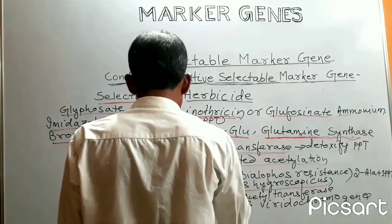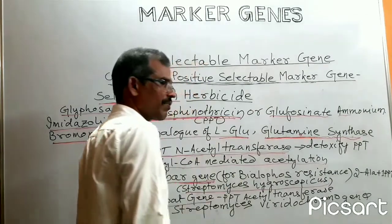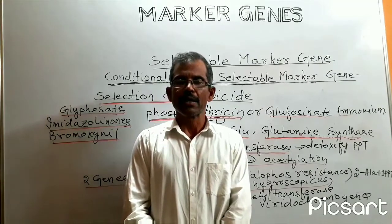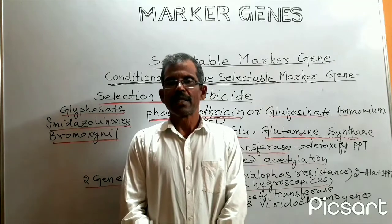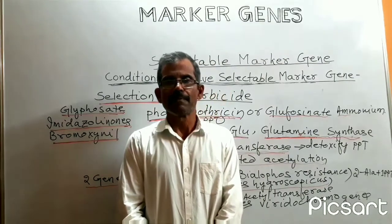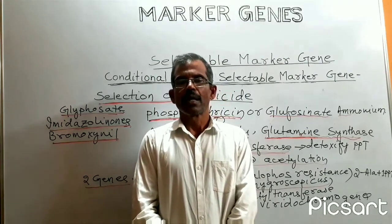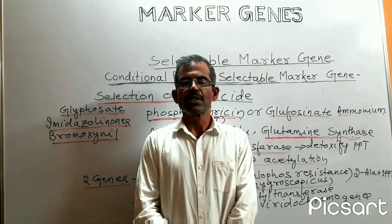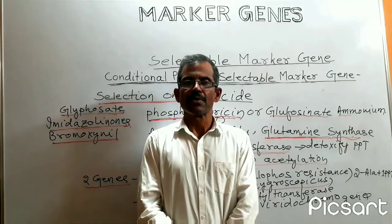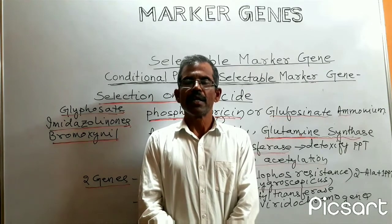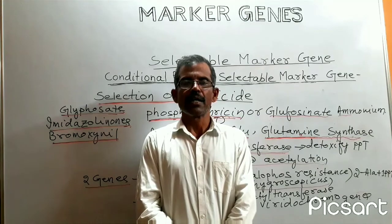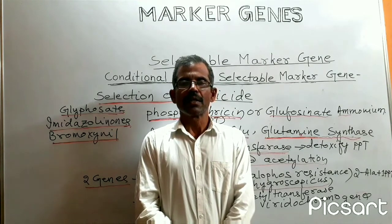These two gene systems, the bar gene and the pat gene, are frequently used as marker gene systems to select transgenic plants in several species. In several species, the kanamycin system does not work effectively, and kanamycin does not kill monocot species efficiently, but phosphinothricin and bialaphos kill monocot species very efficiently. This concludes the discussion on the use of herbicides as selective agents for selecting transgenic plants.